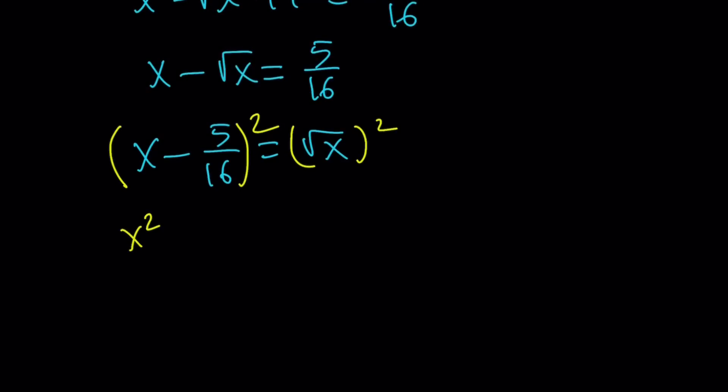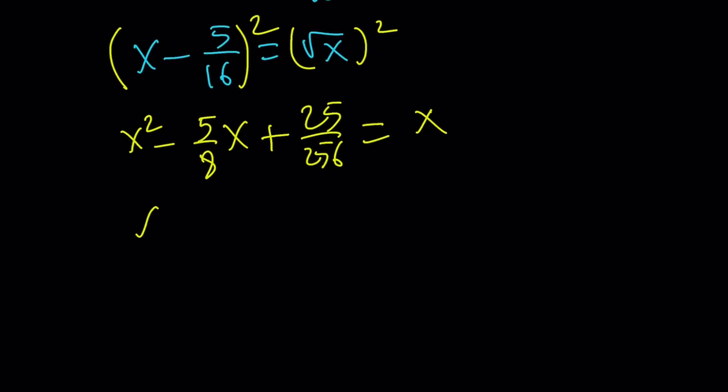That gives us x squared minus 10 over 16, which is 5 over 8 x, plus 25 over 256 equals x. And then you can put the x on the left-hand side: x squared minus 13 over 8 x plus 25 over 256 equals 0. And then you can solve for x from here.